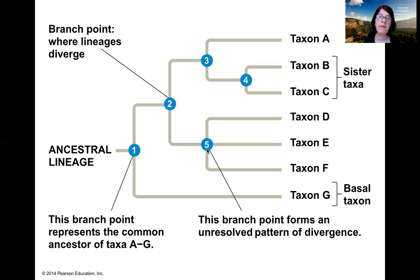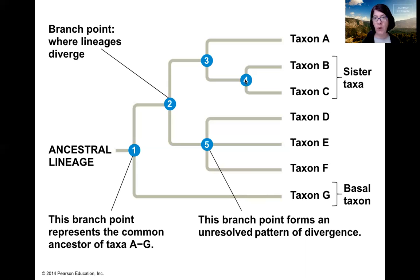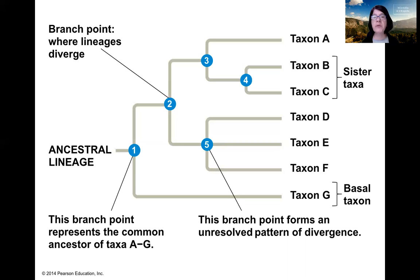If we look at node five, we see that it yielded three different species. This branch point forms an unresolved pattern of divergence. Normally a speciation event leads to splitting into two different species, but here five yields three different taxa, which means we're not sure whether this was a single speciation event or whether there's a speciation event we're missing. The data we have is somewhat limited — the further back we go in time, the fewer data we have to determine evolutionary relationships. It's important that you recognize the major components of a phylogenetic tree.